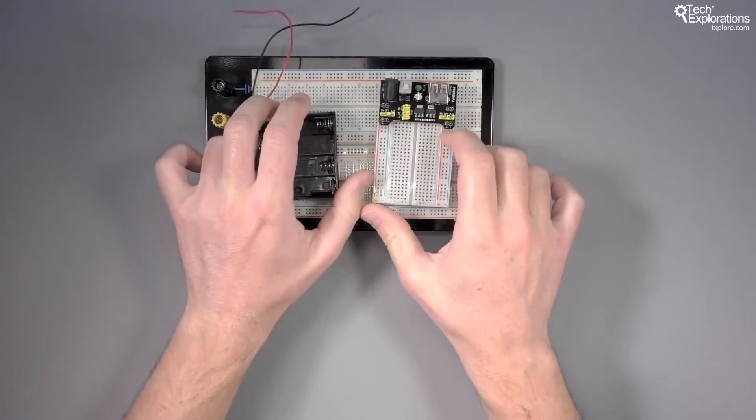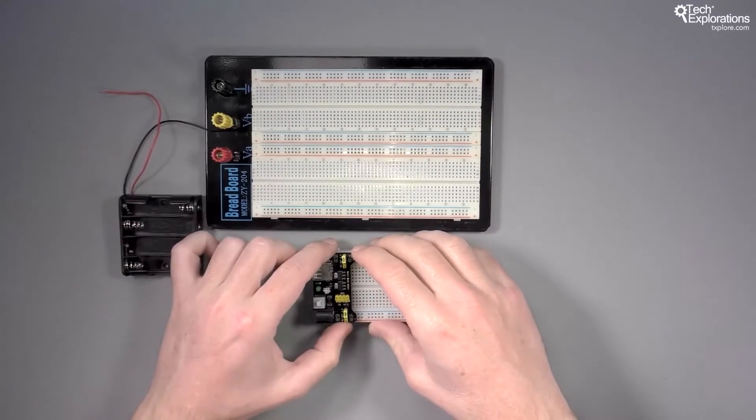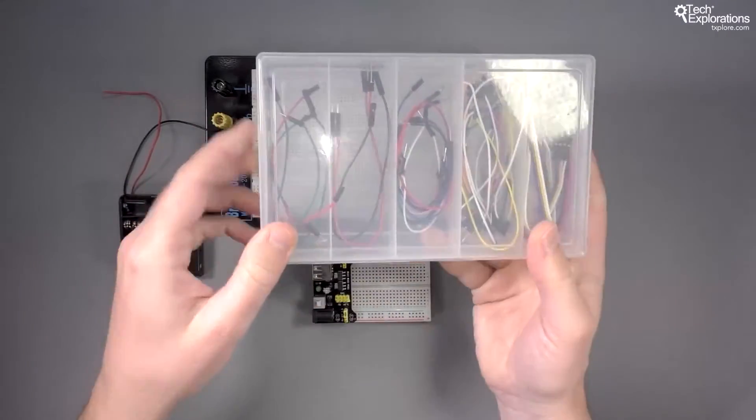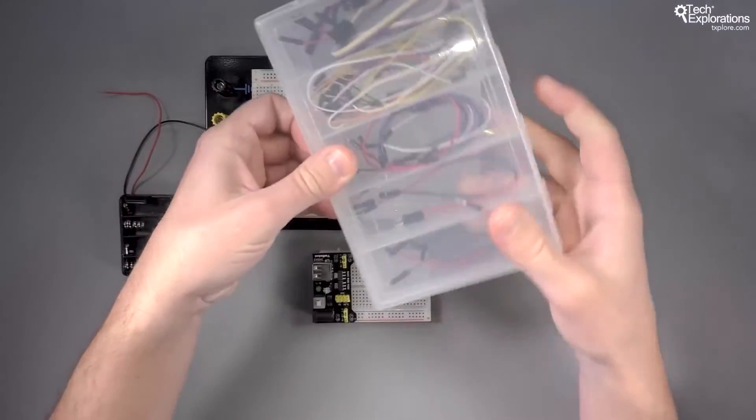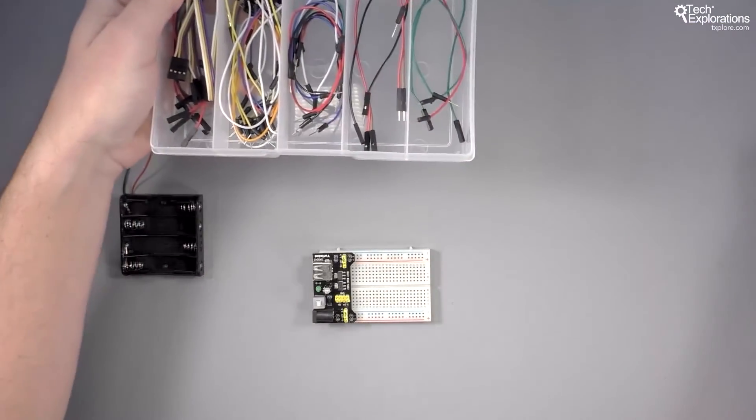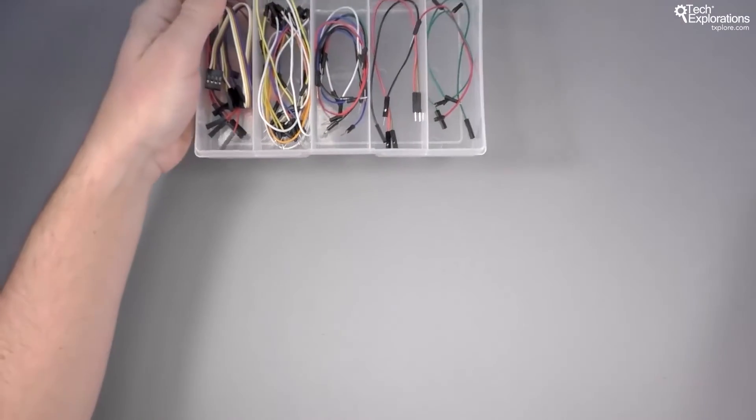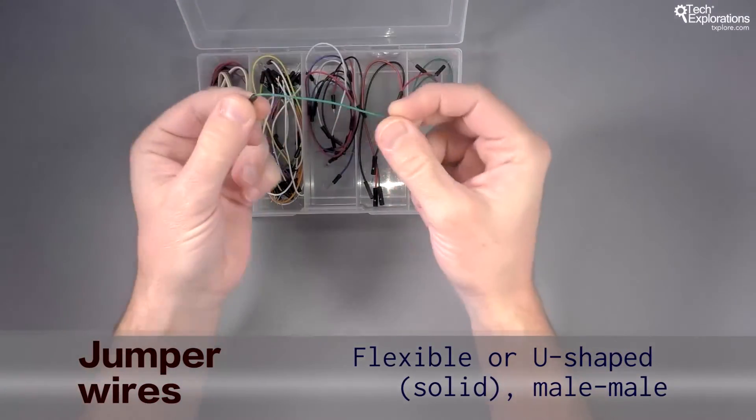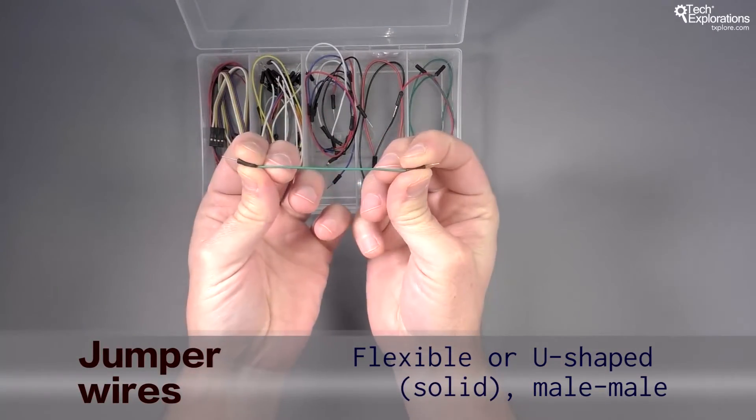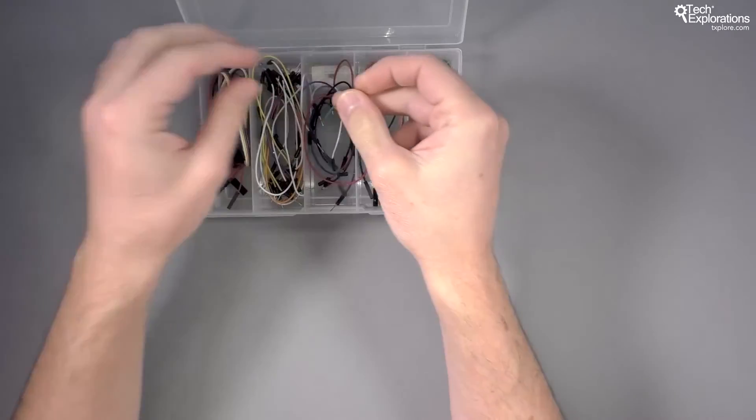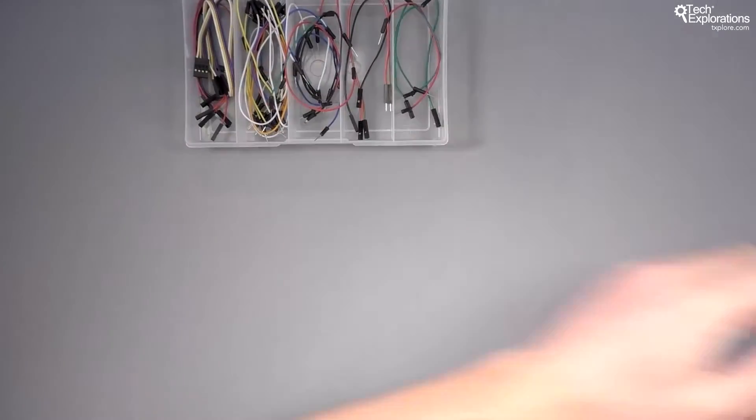Okay, so that's the breadboard and the power supply. Then, in order to put your circuits together and wire them, you will need jumper wires. Jumper wires come in a variety of different types. The ones that I will be using a lot are these flexible male-to-male jumper wires. They come in different lengths and colors, but I will also be using...